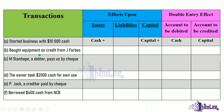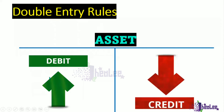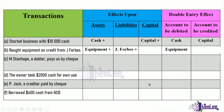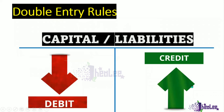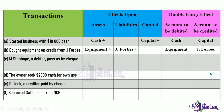Transaction B: bought equipment on credit from J-Forbes. The two items affected are equipment and J-Forbes. Equipment is an asset and because we purchased it, there is an increase — so debit equipment. J-Forbes is a liability because we are owing this person, and there is an increase in what we owe. When liabilities increase, you credit. So the account to be credited is J-Forbes.